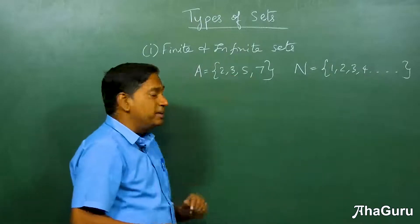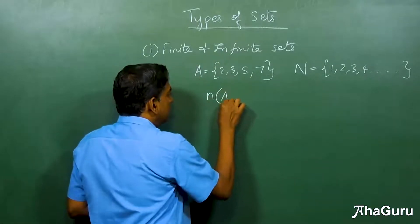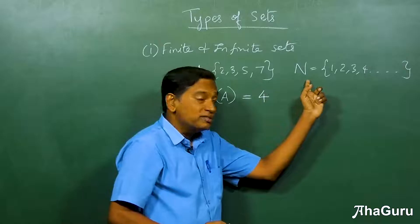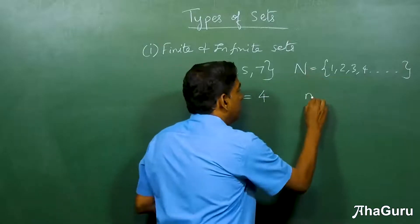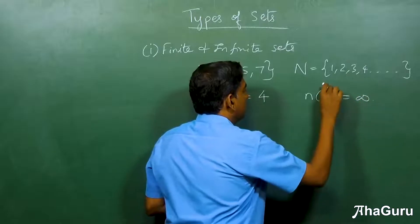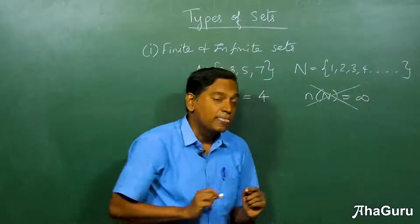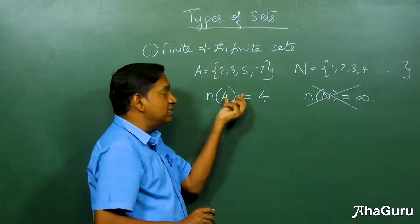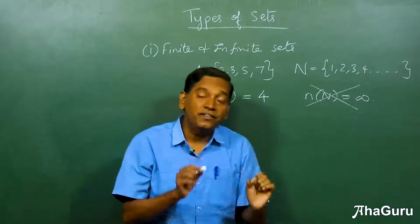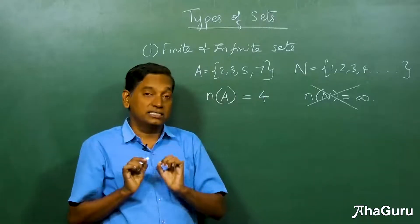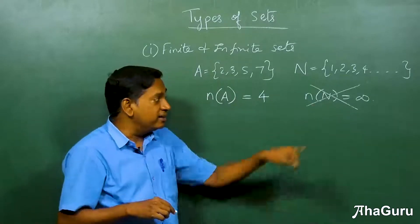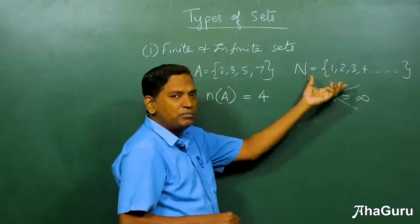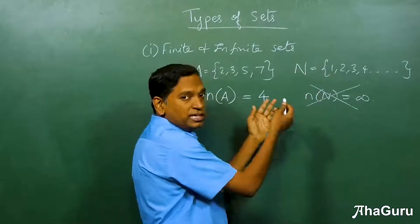The number of elements in a set is denoted by n(A). For an infinite set like N we don't write n(N) = infinity — this is called the cardinality of a set. Cardinality is defined only for finite sets; for infinite sets such as real numbers or integers we simply don't define it this way.